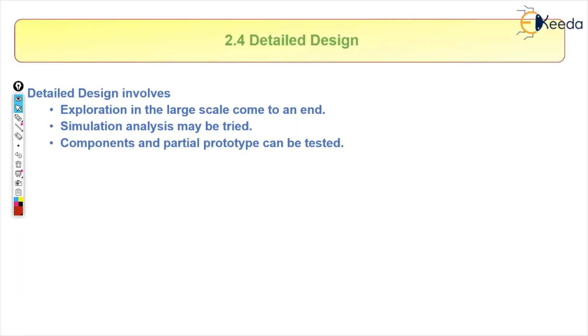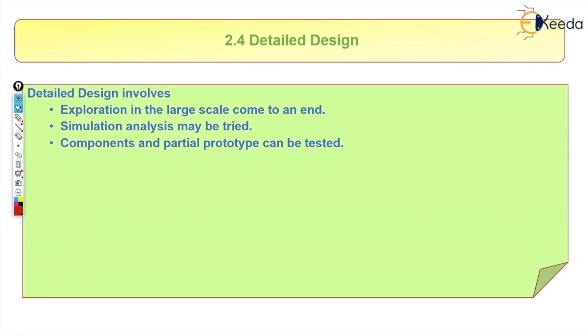After preliminary design, we move to detailed design, going from the large scale down to the small components. Here, simulation analysis may be carried out, and if a prototype is manufactured, components and partial prototypes can be tested. Once detail design is complete, we can proceed to manufacture, testing critical parts if needed.